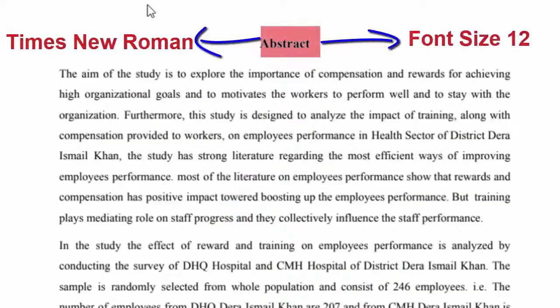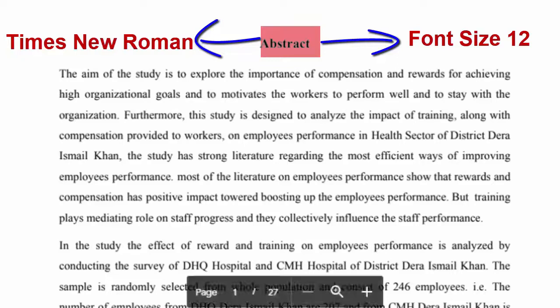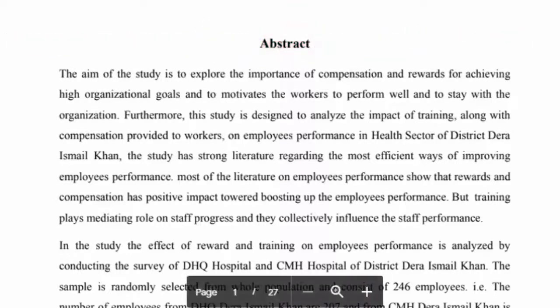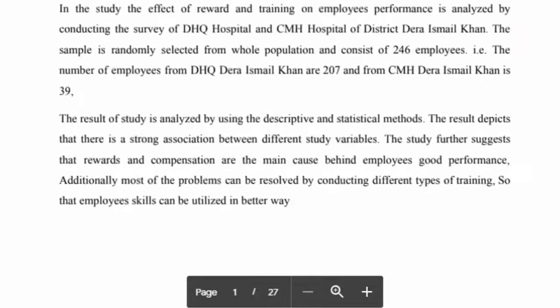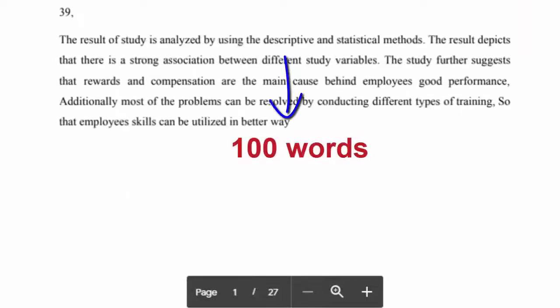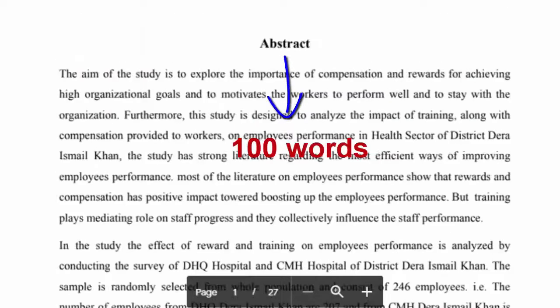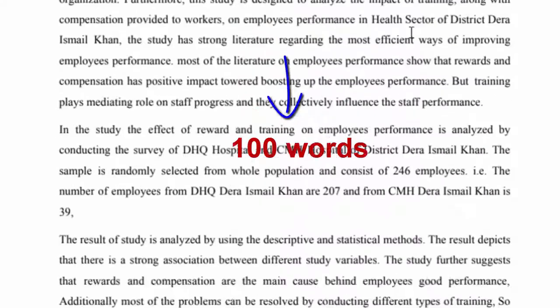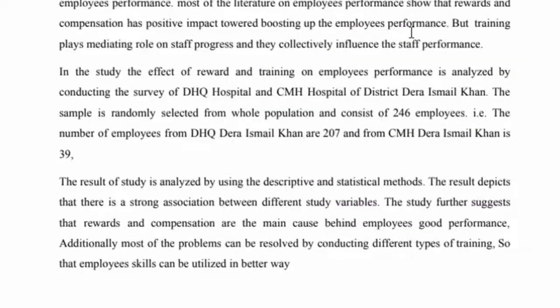2. Abstract of the Research. An abstract is a brief statement about your proposed research study. It usually consists of a maximum of 100 words. Sometimes it may consist of a few sentences demonstrating the problem or main question you want to address in your research.